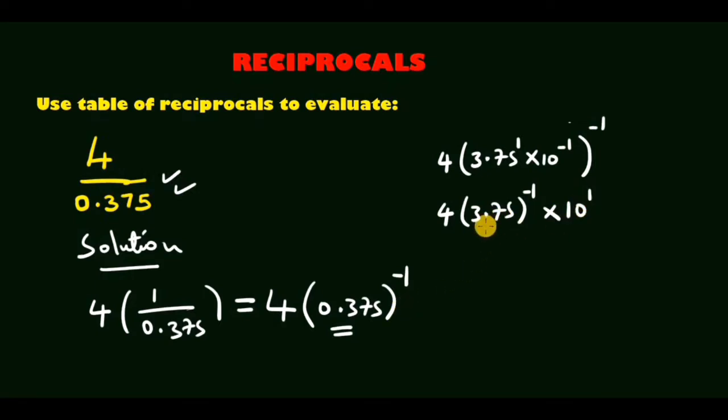At this point, we are remaining with 3.75 raised to power negative 1, and that means we are going to find the reciprocal of 3.75. Now let's look at this table.